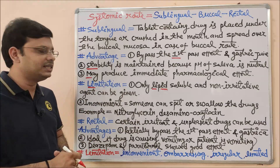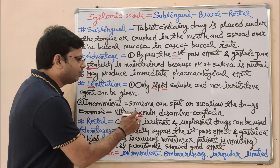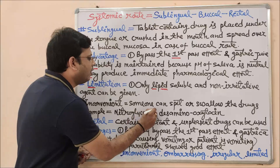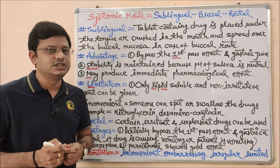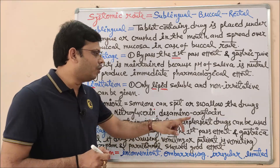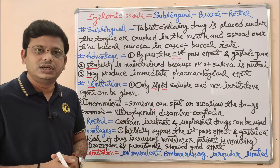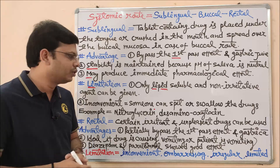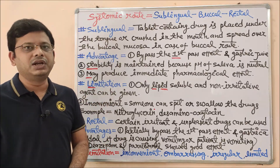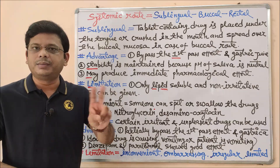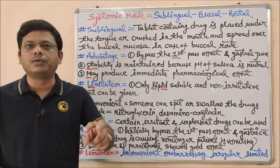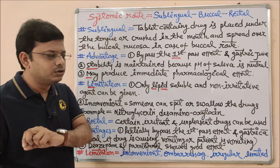The basic examples of sublingual drugs are nitroglycerin, also known as tri-nitroglycerin — an anti-anginal drug that produces a very fast effect compared to oral administration. Another example is aminooxytocin, which is also given through the sublingual route. These advantages and limitations also apply to the buccal route of drug administration.